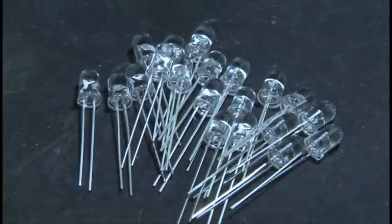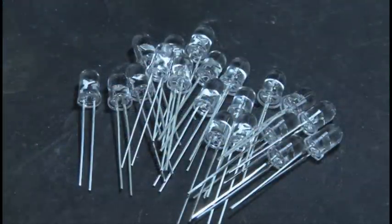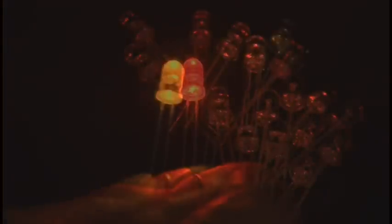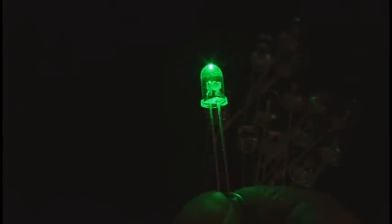Now it's time to get to the LEDs, and there's 20 of them, but there's four different colors, and we don't know which is which, so using a button cell battery, we'll make little piles of blue ones, red ones, yellow ones, and green ones.